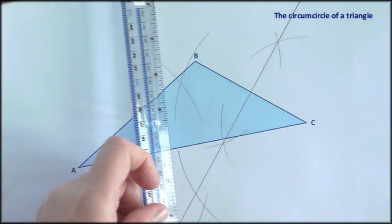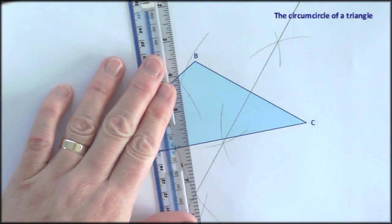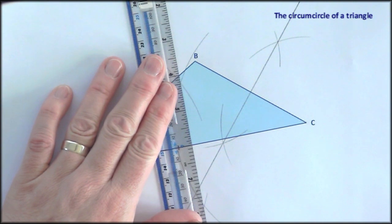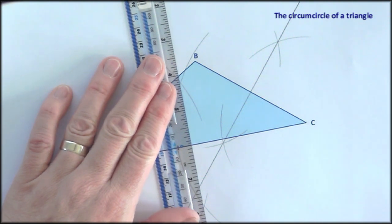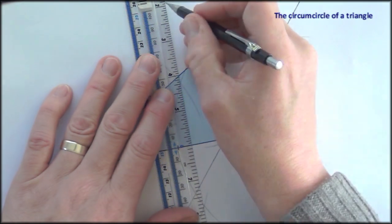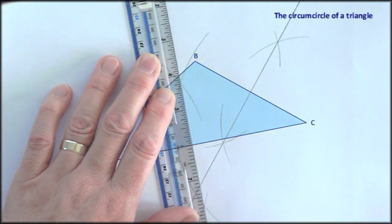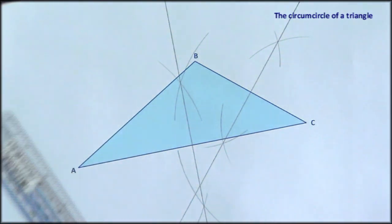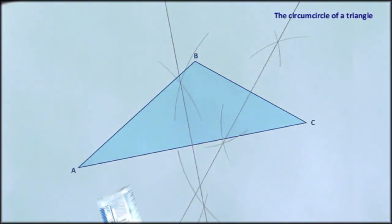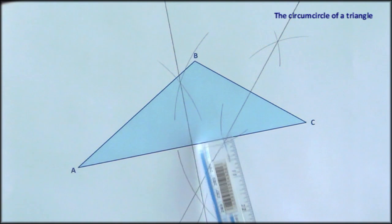It's best to draw these as you go. The diagram is going to get quite cluttered with arcs of circles, and it's easy to lose track if you don't draw these in when they're ready. So there's the perpendicular bisector for AC. I hope you can see that right angle there.